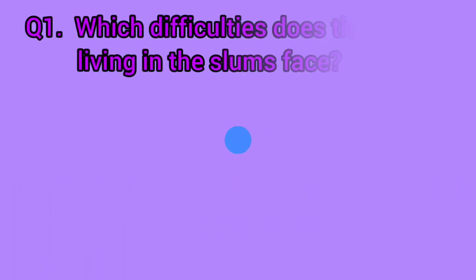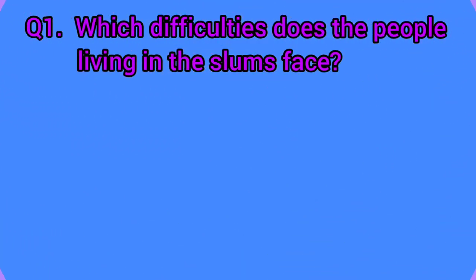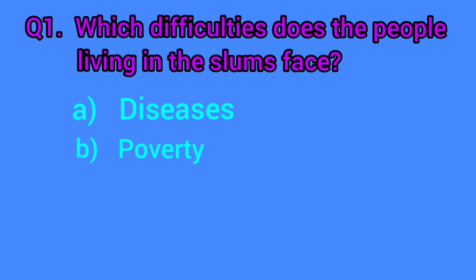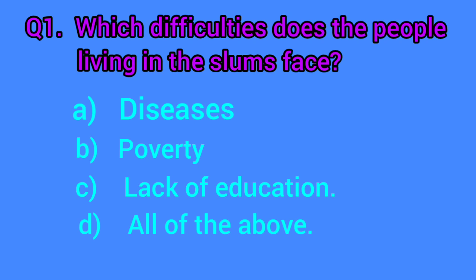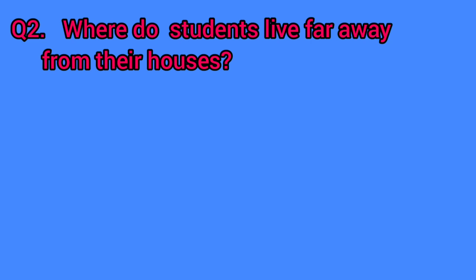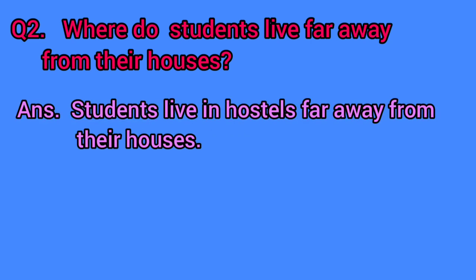Now, dear children, we will do question answers. Question number one is: which difficulties do the people living in slums face? Options are diseases, poverty, lack of education, or all of the above. The answer is all of the above. Question number two is: where do students live far away from their houses? Answer is: students live in hostels far away from their houses.